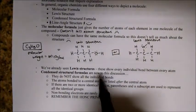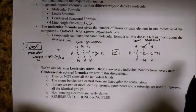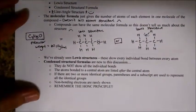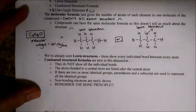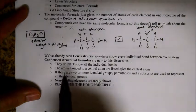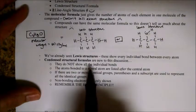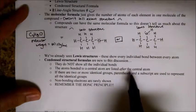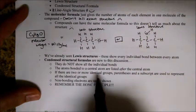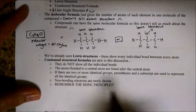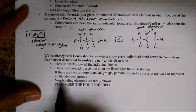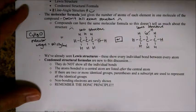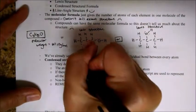Condensed structural formulas are new to this discussion. They are not as easy — they're a little counterintuitive. But as long as you remember the HONK principle, you will be fine. They do not show all the individual atoms. The atoms bonded to a central atom are listed after the central atom. If there are two or more identical groups, parentheses and a subscript are used. Non-bonding electrons are rarely shown.